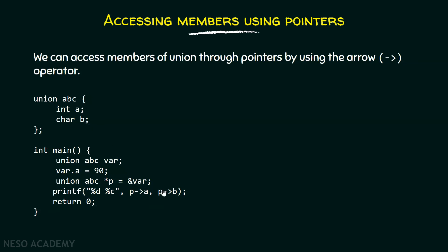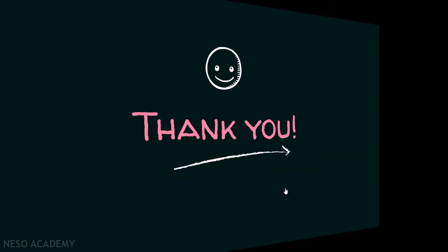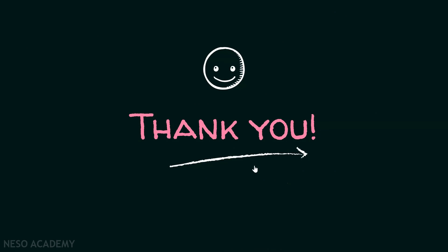The output of this program is 90 and capital Z. 90 because var.A is 90, and the ASCII code of capital Z is 90. var.B is also 90, and since we are printing it as a character, capital Z gets printed on the screen. Okay friends, this is it for now. Thank you for watching this presentation.